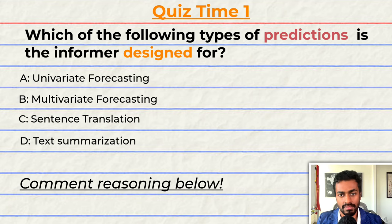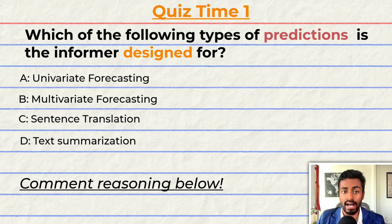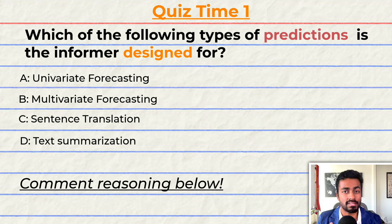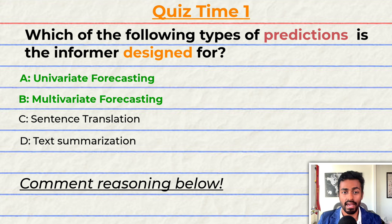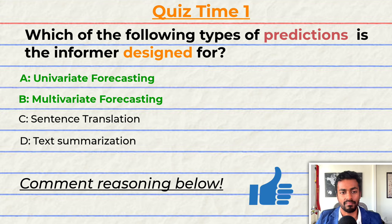Quiz time — have you been paying attention? Which of the following types of predictions is the Informer designed for? A) Univariate forecasting. B) Multivariate forecasting. C) Sentence translation. Or D) Text summarization. Note that multiple options may be correct. The correct answers are A and B. But can you tell me why? Comment your reasoning below and let's have a discussion. That's going to do it for pass one and quiz one — keep paying attention because I'll be back to quiz you.